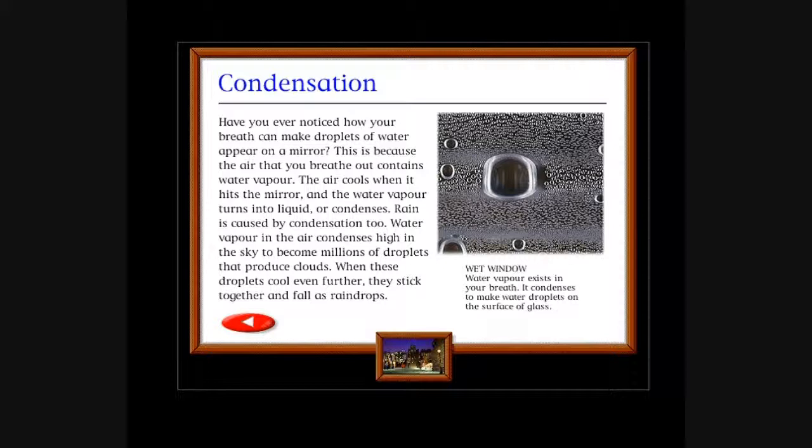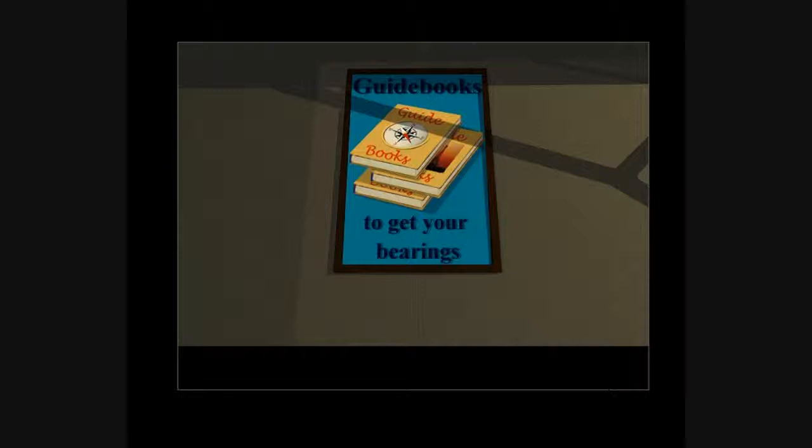Condensation: Have you ever noticed how your breath can make droplets of water appear on a mirror? This is because the air that you breathe out contains water vapor. The air cools when it hits the mirror and the water vapor turns into liquid or condenses. Rain is caused by condensation too. Water vapor in the air condenses high in the sky to become millions of droplets that produce clouds. When these droplets cool even further, they stick together and fall as raindrops. Wet window: Water vapor exists in your breath, it condenses to make water droplets on the surface of glass. Condensation or rain: Rain makes droplets on glass. I suppose condensation's the inside and rain is the outside. So if you want to wash both sides of your window, have it rain outside and have your place be condensed inside.